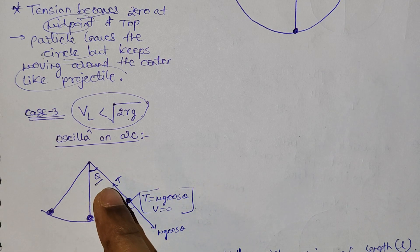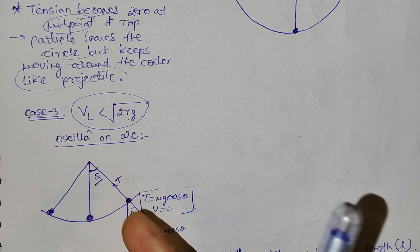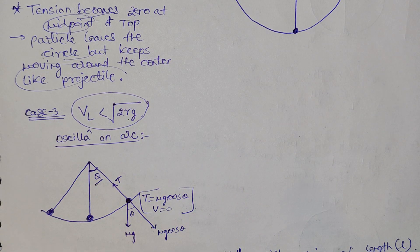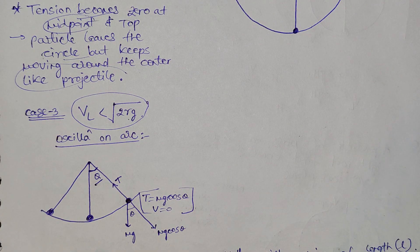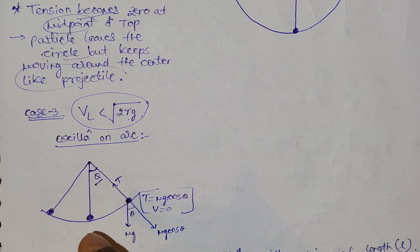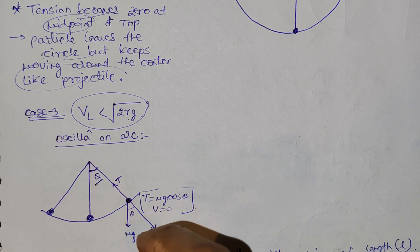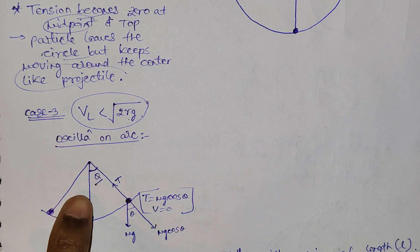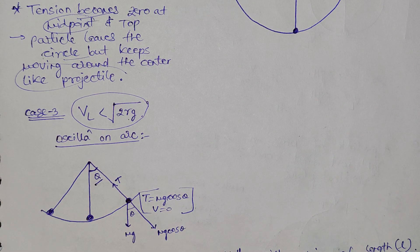The mg component is mg·cos(theta) since the angle is theta. Tension acts inward. For net centripetal force: tension minus mg·cos(theta). Since the particle is at rest at that point, tension equals mg·cos(theta) and velocity is zero because the particle moves in an arc.